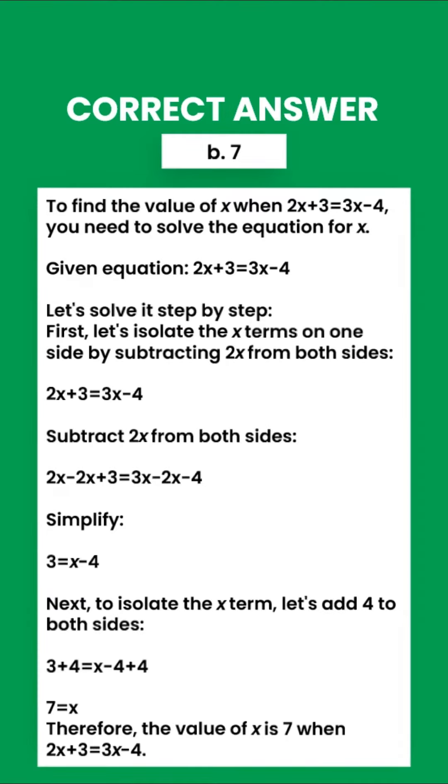To find the value of x when 2x plus 3 equals 3x minus 4, you need to solve the equation for x. Given equation: 2x plus 3 equals 3x minus 4.